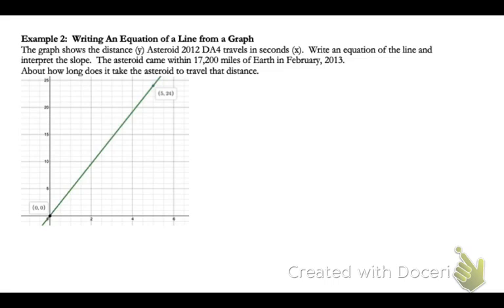Now let's look at this situation. The graph shows the distance y that asteroid 2012 DA4 travels in so many seconds x. Write an equation of the line and interpret the slope. Then the asteroid came within 17,200 miles of earth in February of 2013. How long does it take the asteroid to travel that distance?